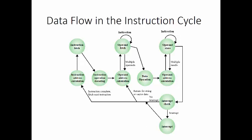The fetch and indirect cycles are simple and pretty predictable. The execute cycle takes many forms. The form depends on which of the various machine instructions is in the instruction register. This cycle may involve transferring data among registers, read or write to memory or I/O, or the invocation of the arithmetic logic unit. Like fetch and indirect cycles, the interrupt cycle is simple and predictable. The contents of the program counter need to be saved so the processor can resume normal activity after the interrupt.